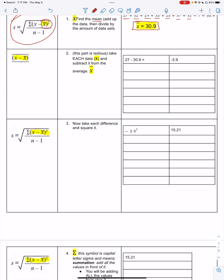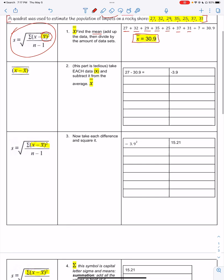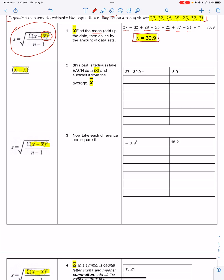Step two is a little bit tedious. Each data point that you have - the 27, 32, 29, and so on - you are going to subtract from the average of all of the data. Where X is standing for each data point or each data value, each measurement.